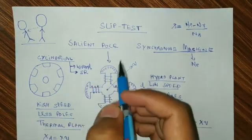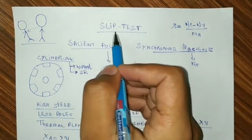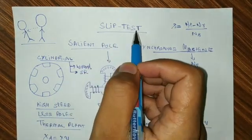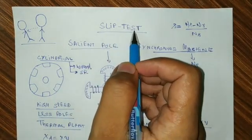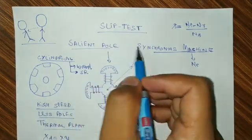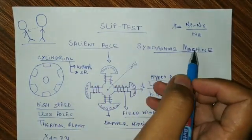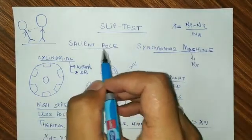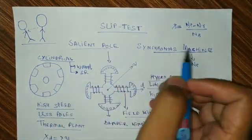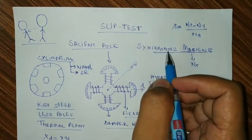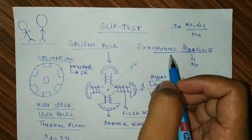First of all, we should know that slip test is done only for salient pole in synchronous machines. Why salient pole I will discuss, and synchronous machine I have already discussed in my last videos.